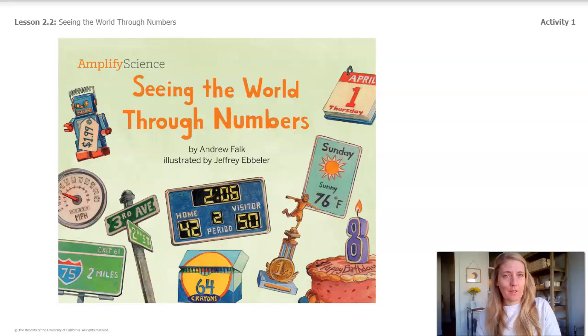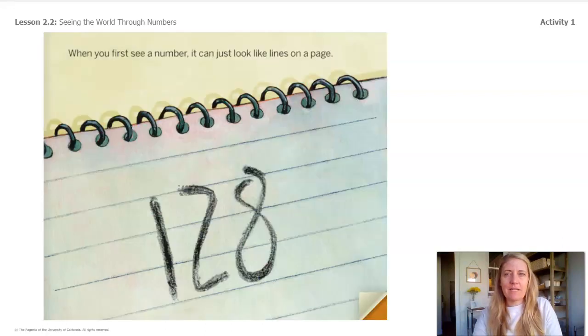As we get ready to read this book, you are going to visualize what the numbers in the book mean and what they communicate about the world. For example, as I read, I can visualize what the different numbers mean. On the first page, it says, when you first see a number, it can look just like lines on a page.